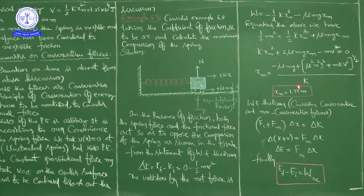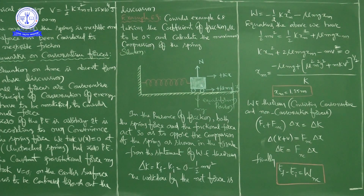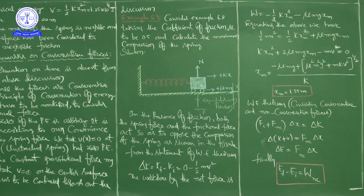In the previous example (6.8), we got xm = 2 meters, but here we got xm = 1.35 meters. This value is less than the previous value. That is because here we considered the frictional force, whereas in the previous example we did not — the surface was smooth. Now with a rough surface, the maximum compression of the spring is 1.35 meters.